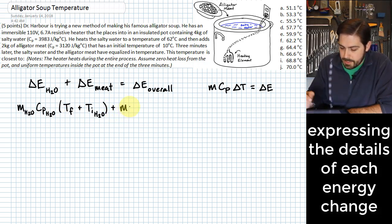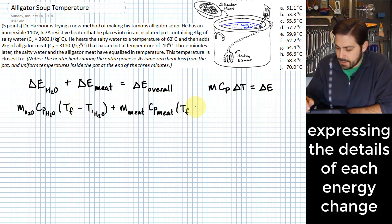Now we need to put in the mass of the meat and we need to put in the specific heat value of the meat and the change in temperature of the meat, which we need to have the difference between these two temperatures. So here we put in the initial temperature of the meat.